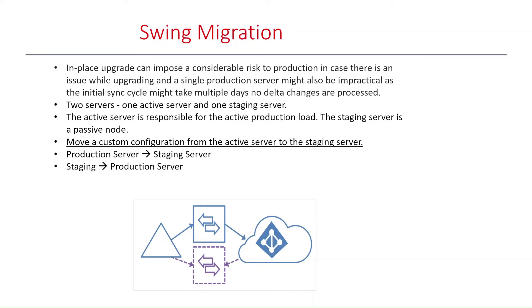If you have made a custom configuration and your staging server doesn't have it, move the custom configuration from the active server to the staging server. When its configuration is reviewed and verified to be accurate, the current production server — which has the outdated version — is pushed to staging mode and this server is made active. The server with the outdated version, now in staging mode, is then upgraded next.